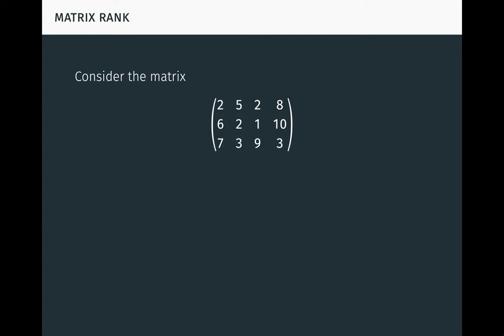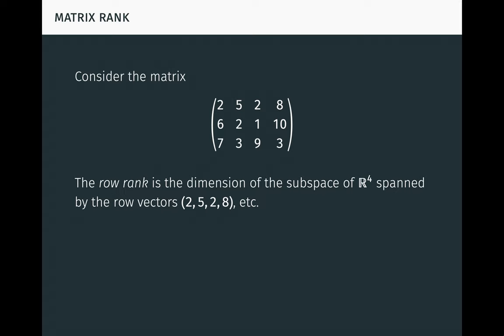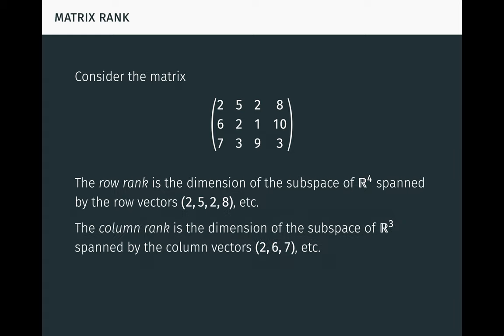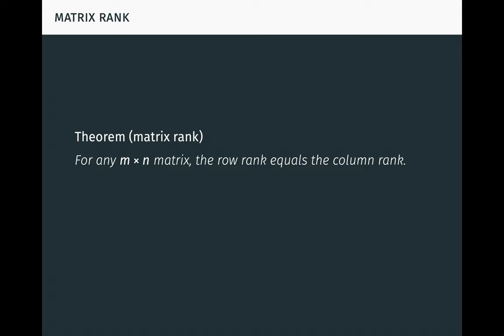To begin, consider the matrix seen here. The row rank is the dimension of the subspace of R4 spanned by the row vectors 2, 5, 2, 8, and so on. The column rank is the dimension of the subspace of R3 spanned by the column vectors 2, 6, 7, and so on. For this matrix, the row rank and column rank both equal 3. The fact that the row rank equals the column rank is not coincidental. In fact, we have a theorem: for any m by n matrix, the row rank equals the column rank. This result is surprising and mysterious. It tells us, for example, that if a matrix with one million rows and two million columns happens to have a row rank of 737,123, then it also has a column rank of 737,123. Why in God's name would that be true?